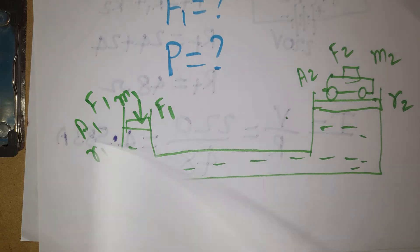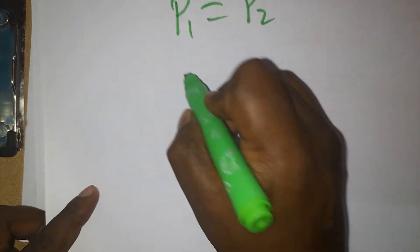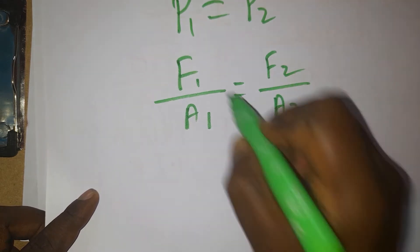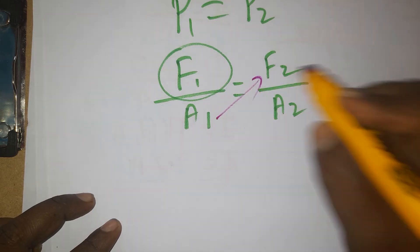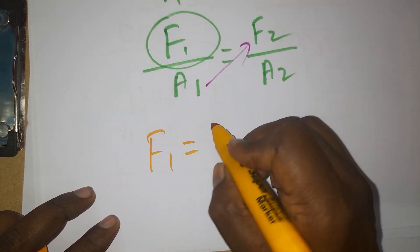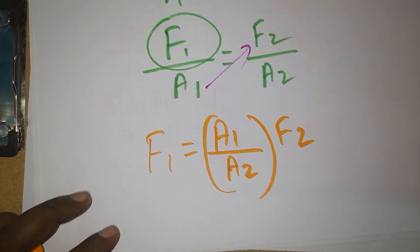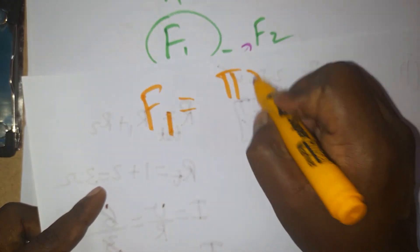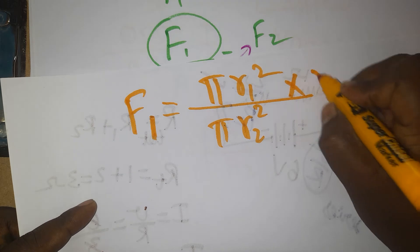Pressure 1 equals Pressure 2. Pressure is Force per unit Area, so F1/A1 = F2/A2. Rearranging, Force 1 equals (Area 1 / Area 2) multiplied by Force 2. Since the pistons are circular, Area equals pi r squared, so we get: F1 = (pi r1² / pi r2²) × F2.